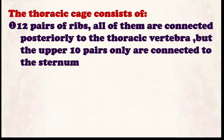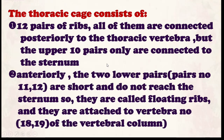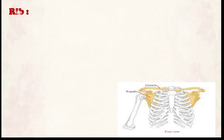The upper 10 pairs of ribs are connected anteriorly to the sternum. The sternum is the flat bone to which 10 pairs of ribs are connected together anteriorly. The two lower pairs — pairs number 11 and 12 — are short and do not reach the sternum, so they are called floating ribs. They help make the chest cavity wide because the lungs and heart exist inside it. These floating ribs are attached to vertebrae number 18 and 19 of the vertebral column.